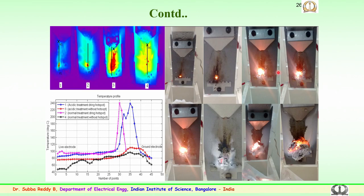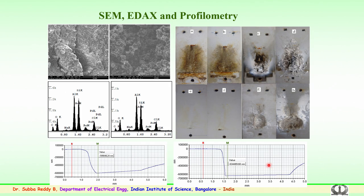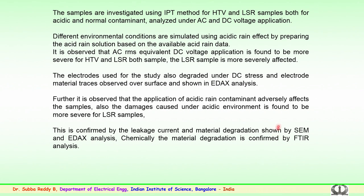The degradation from the inclined plane experimentation happens at several locations. These are the various samples showing the degradation which has occurred — surface morphological studies have been carried out on samples investigated using the inclined plane method, particularly for high temperature vulcanized (HTV) and liquid silicon rubber (LSR) samples, for both acidic and normal contaminants, analyzed under both AC and DC voltage applications.